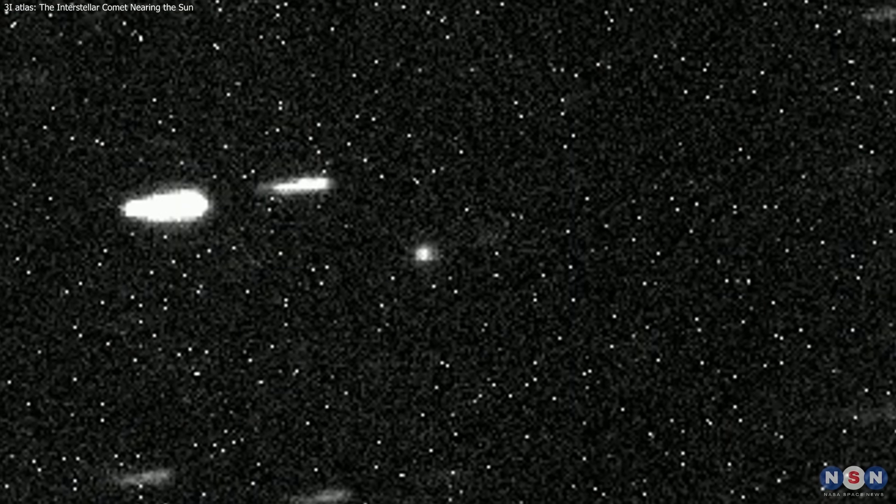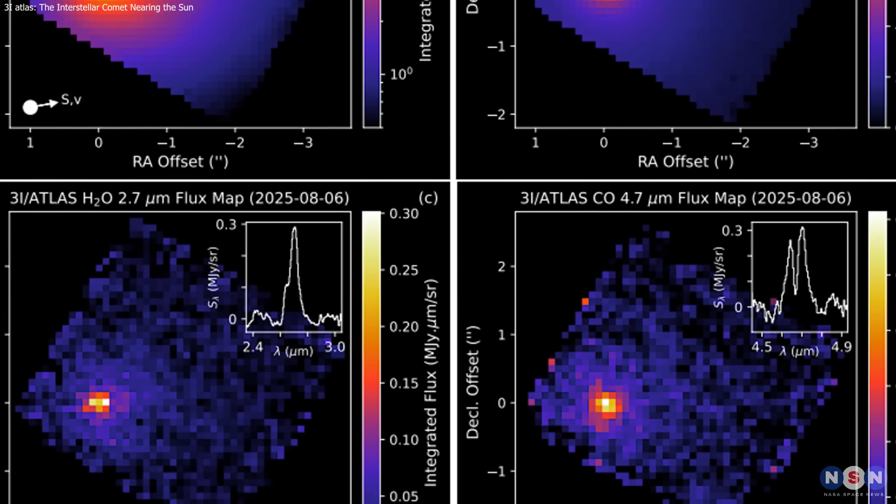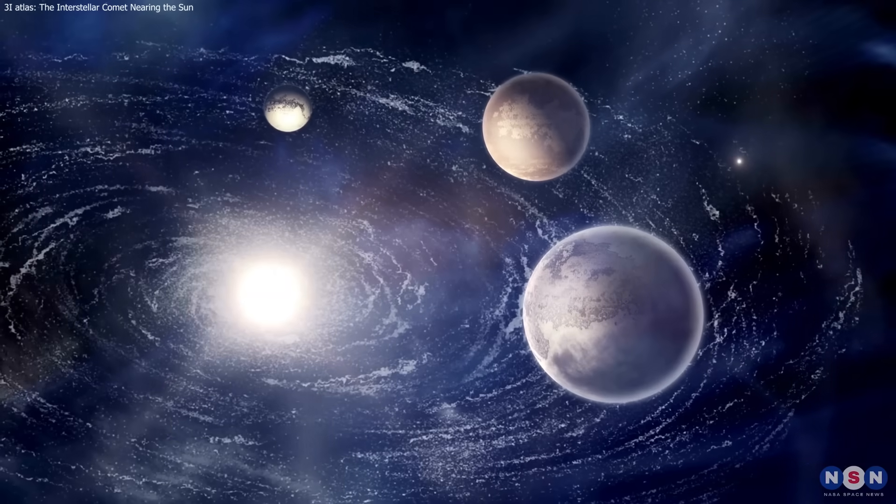3i Atlas is unlike any comet we've seen. Its unique chemistry and early activity reveal clues from another star system. What happens at perihelion could reshape how we study interstellar visitors.